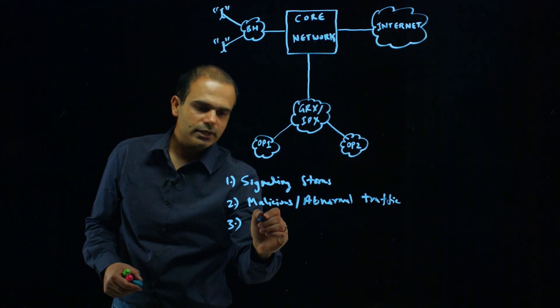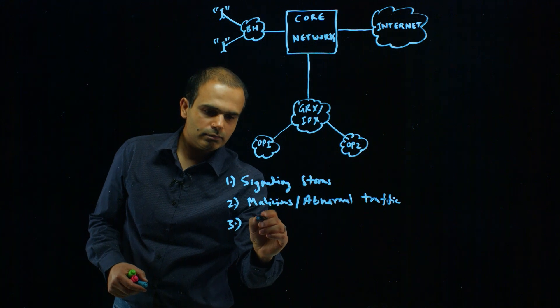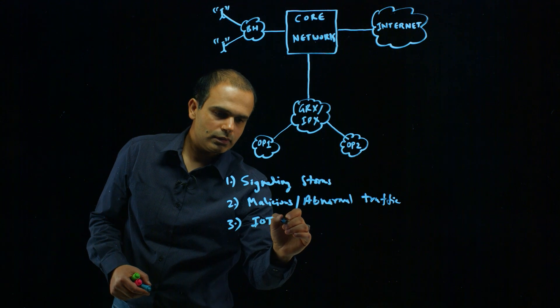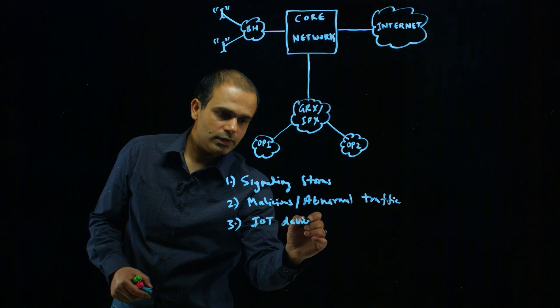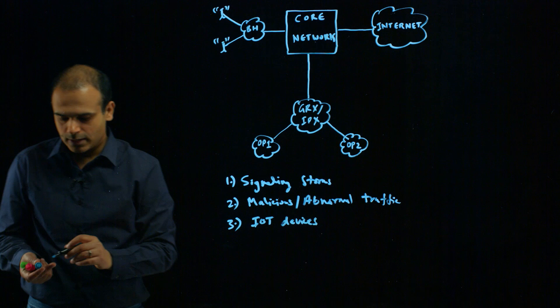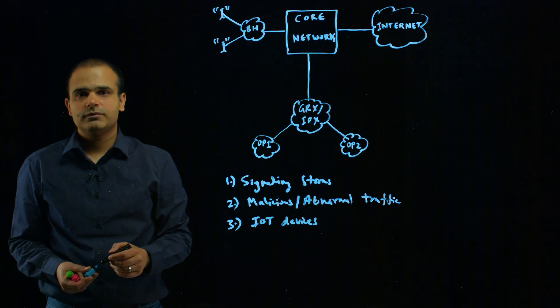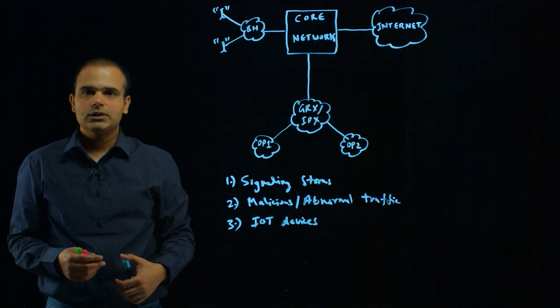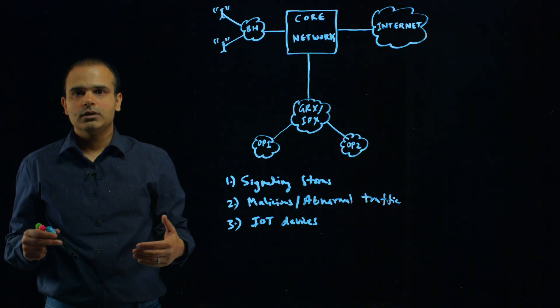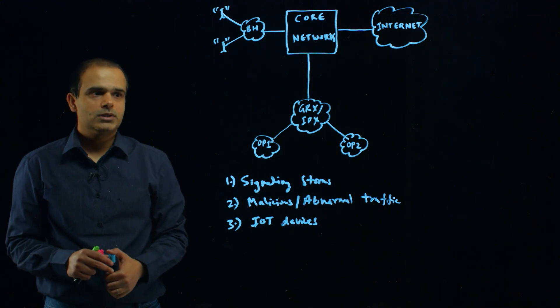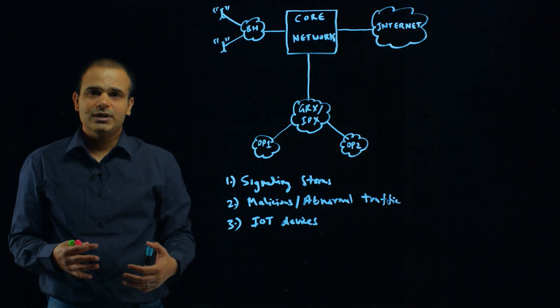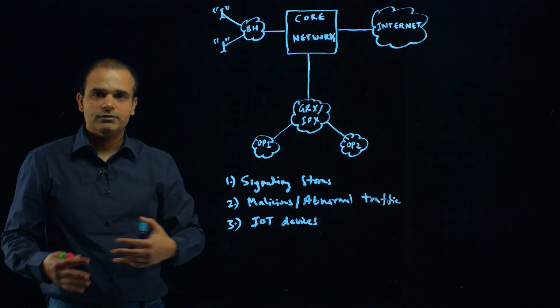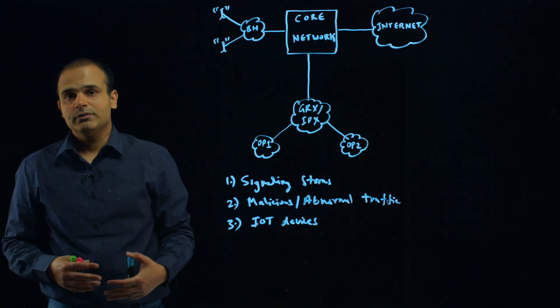The third type of attack is IoT device-initiated attacks. We have seen increased use of IoT devices over the roaming network, and this can potentially lead to a lot of abnormalities in the signaling because signaling is really not meant for different types of IoT devices.